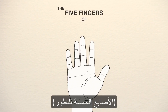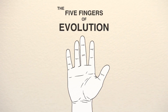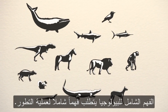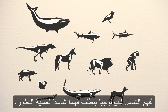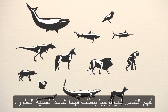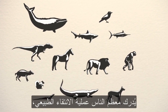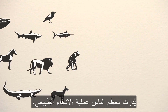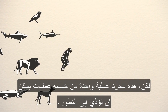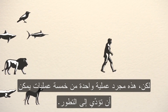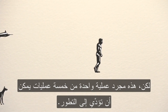The five fingers of evolution. A thorough understanding of biology requires a thorough understanding of the process of evolution. Most people are familiar with the process of natural selection. However, this is just one of five processes that can result in evolution.